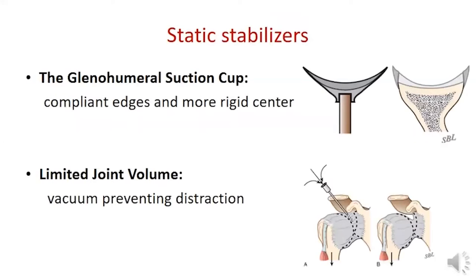The glenohumeral joint looks like a suction cup with its compliant edges and more rigid center. Normally, the glenohumeral capsule establishes a limited joint volume, so distraction of the humeral head produces a relative vacuum within the capsule that resists further displacement and translation.